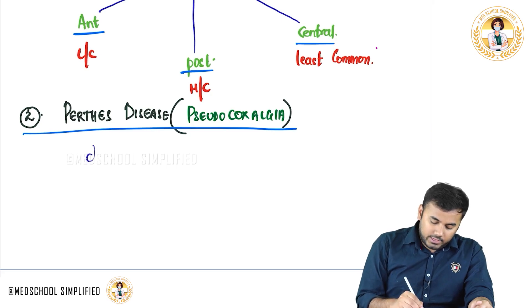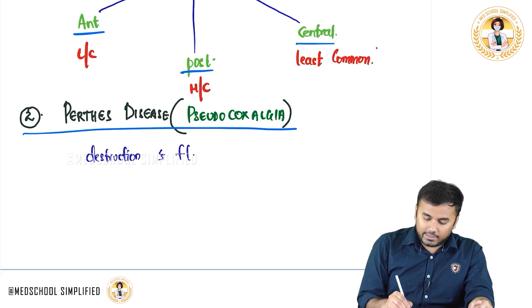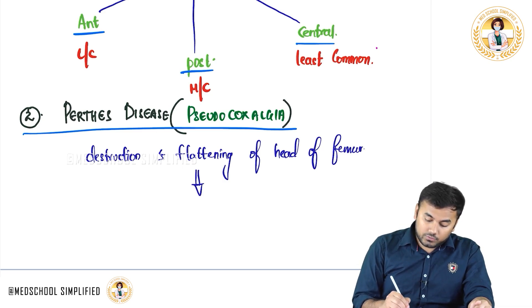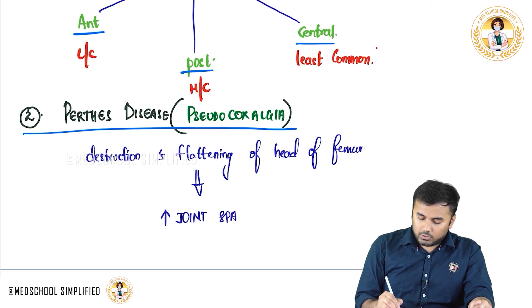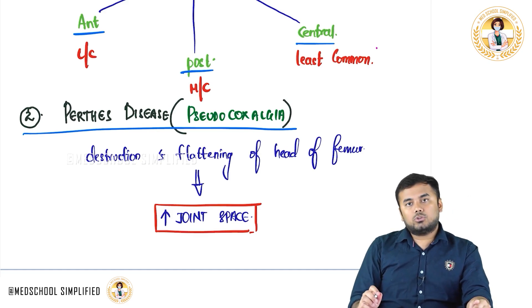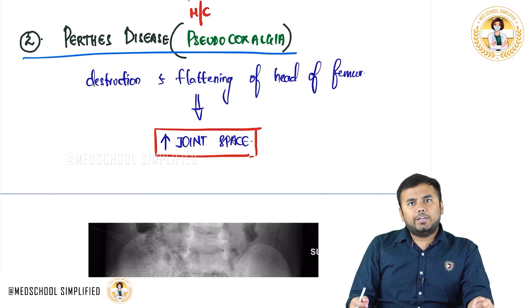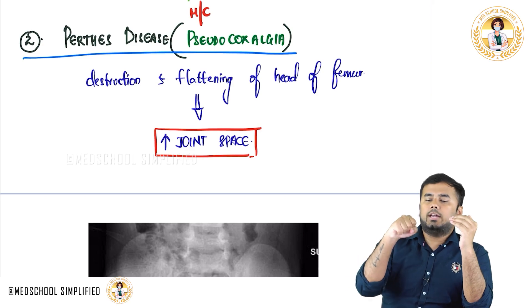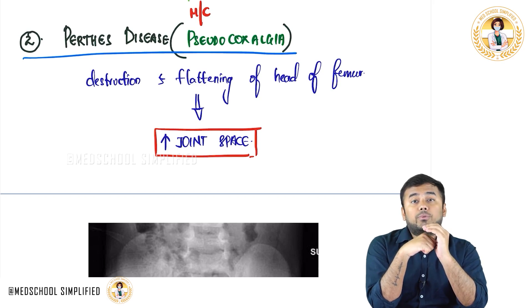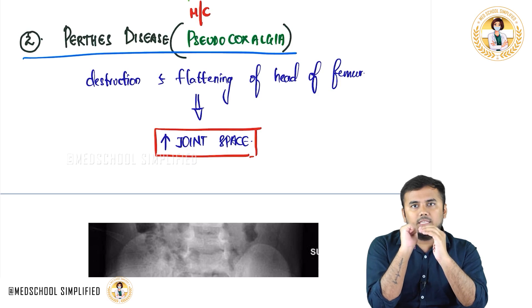In Perthes disease, there is destruction and flattening of the head of the femur, which leads to an increase in the joint space. For example, the acetabulum normally has the femoral head perfectly locked into it. When the femoral head is destroyed, part of the bone is lost and becomes flat, creating a gap in the joint space. Because of this gap, there can be easy dislocation.